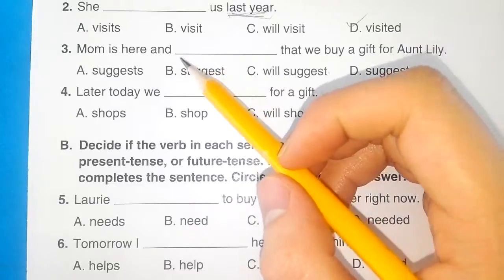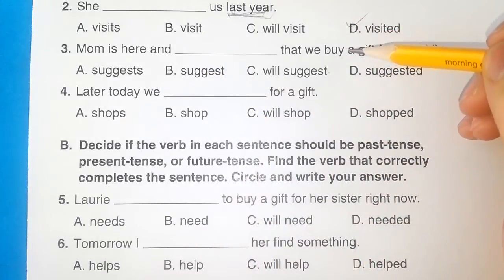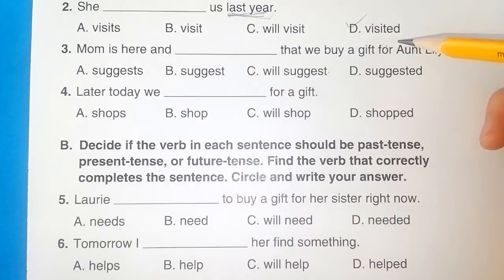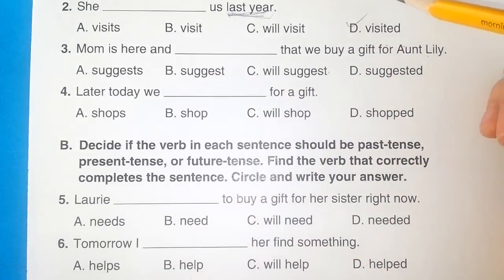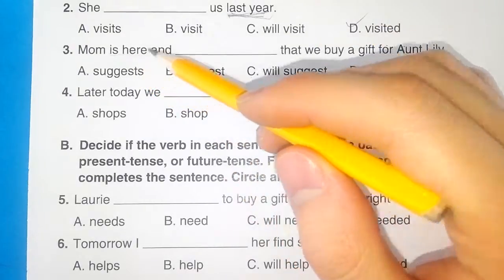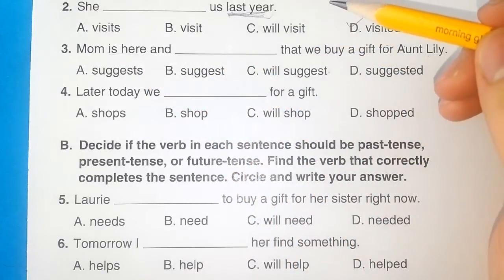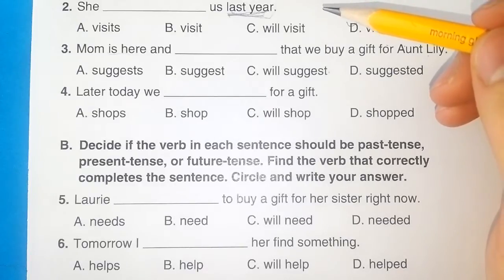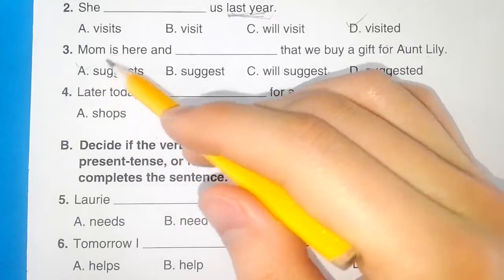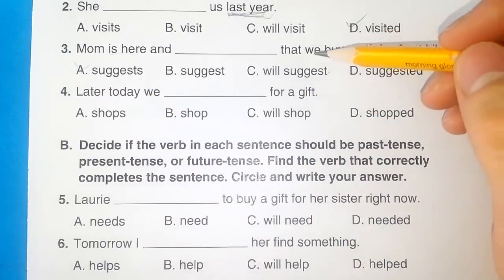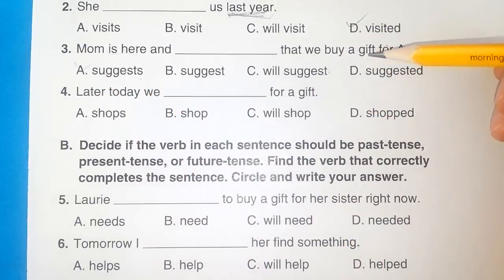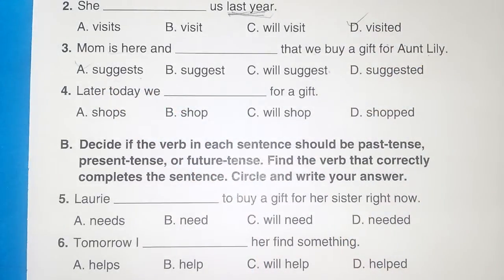Question 3: Mom is here and suggests that we buy a gift for Lily. 현재죠. Mom suggests — A가 되겠죠. We buy a gift for Lily.